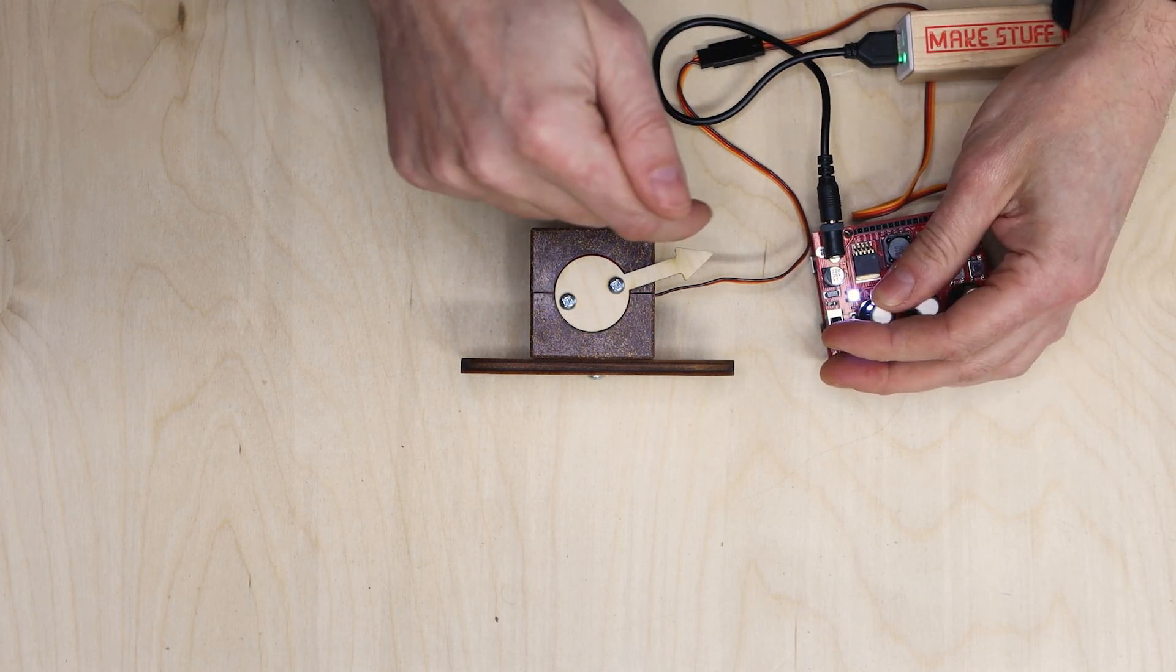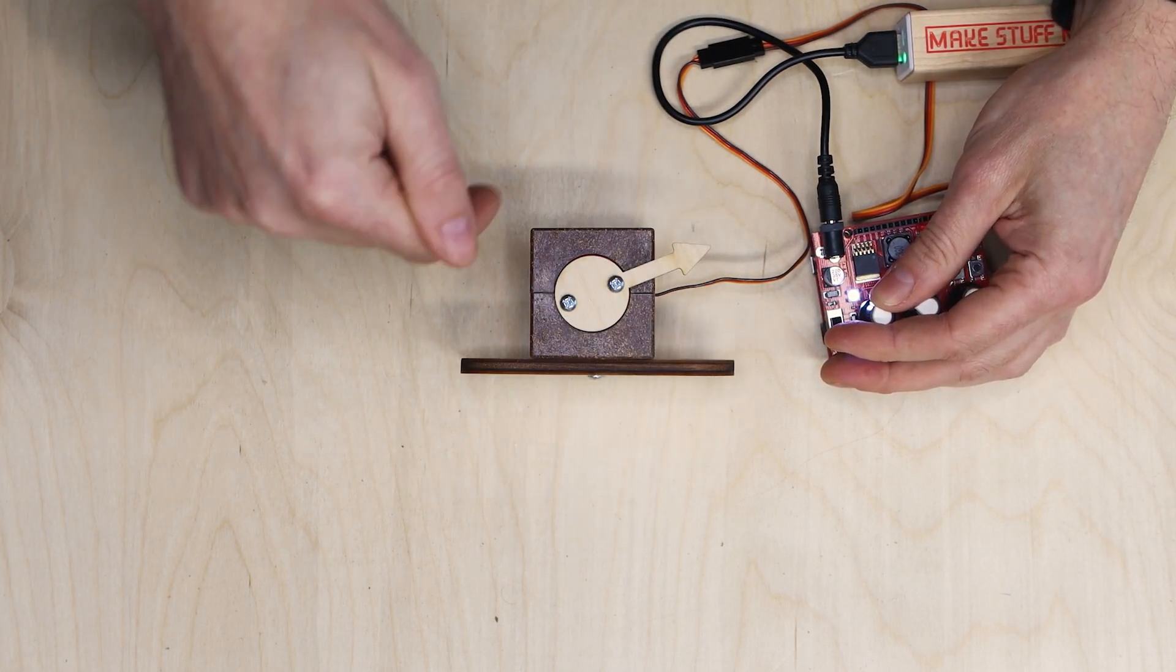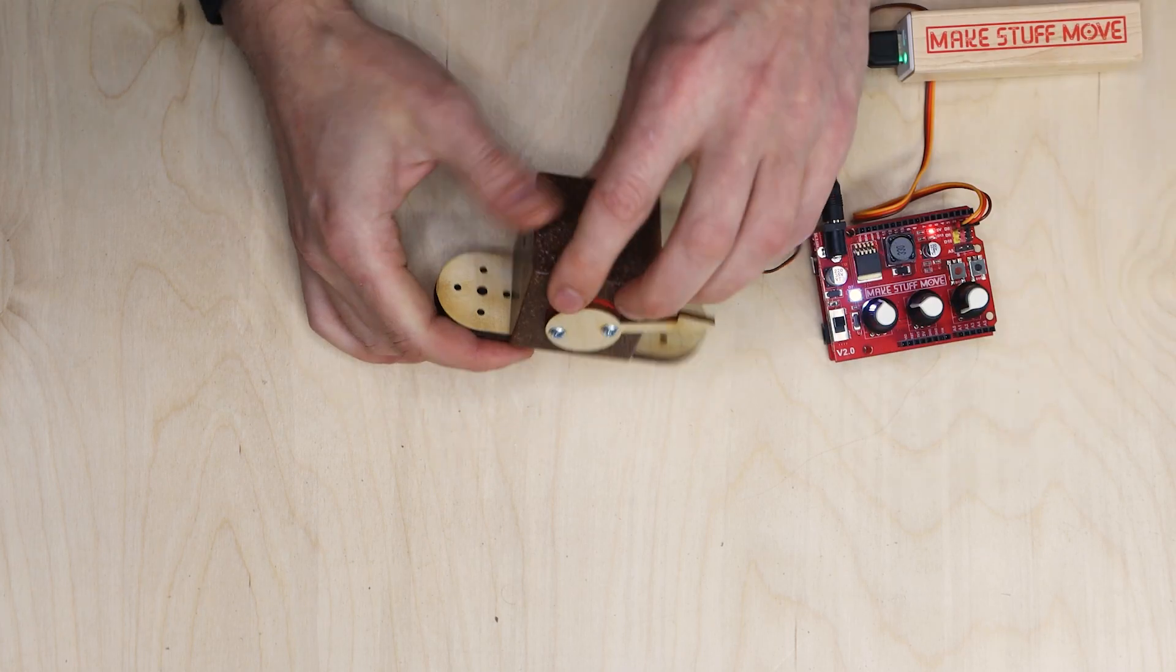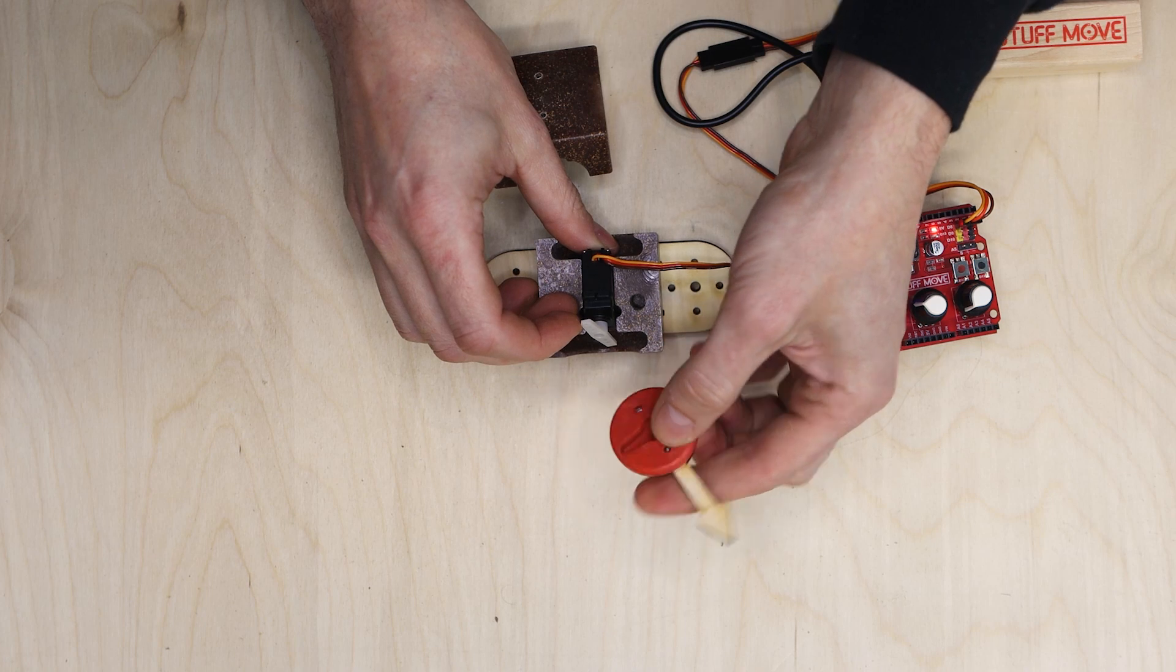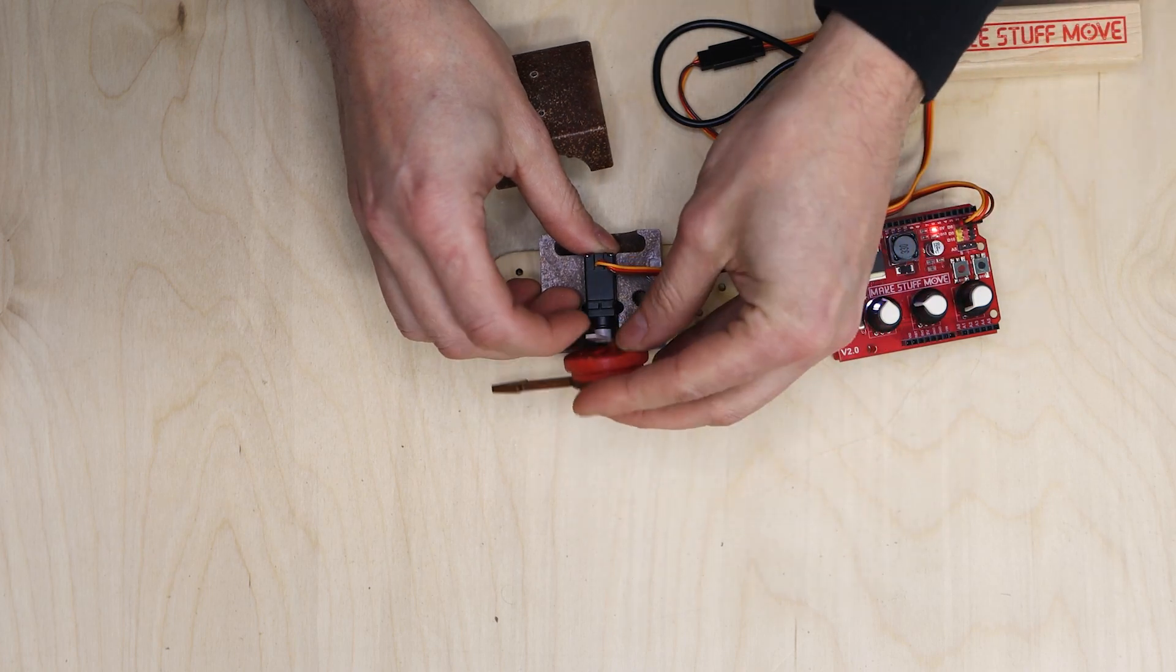Now one more thing. Let's just say I actually want to swing under the bottom. I want it to start here and go under. So in that case, what I can do is take it apart, but instead of taking the servo horn off, I can just turn this all the way around and put it back on.